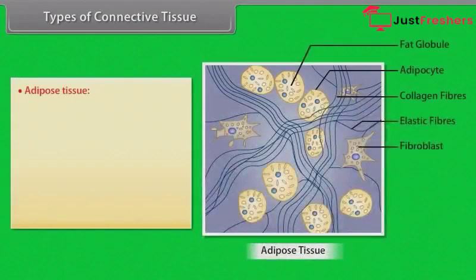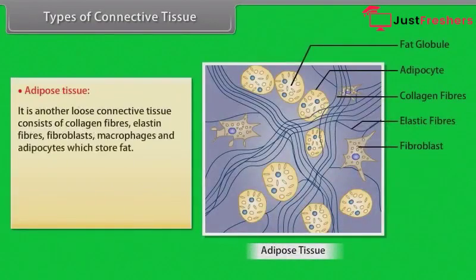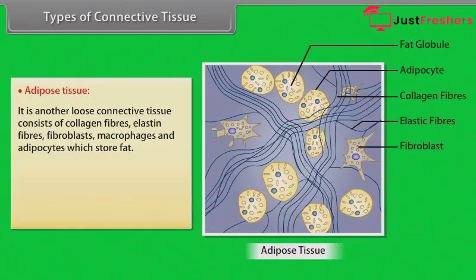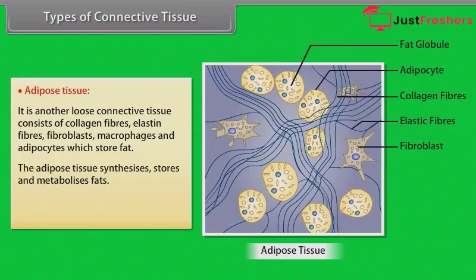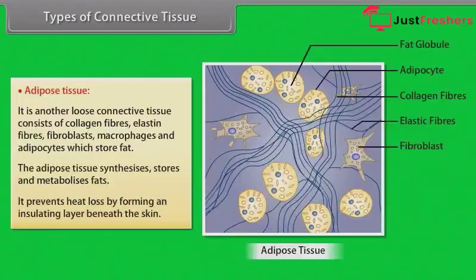Adipose tissue is another loose connective tissue. It consists of collagen fibers, elastin fibers, fibroblasts, macrophages, and adipocytes which store fat. The adipose tissue synthesizes, stores, and metabolizes fats. It prevents heat loss by forming an insulating layer beneath the skin.